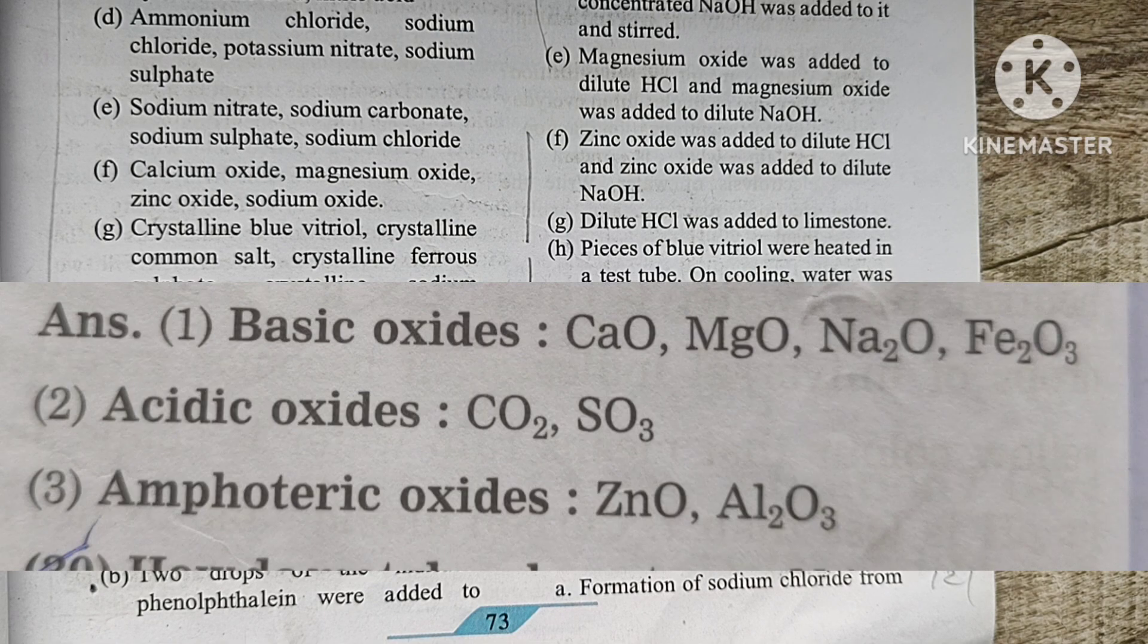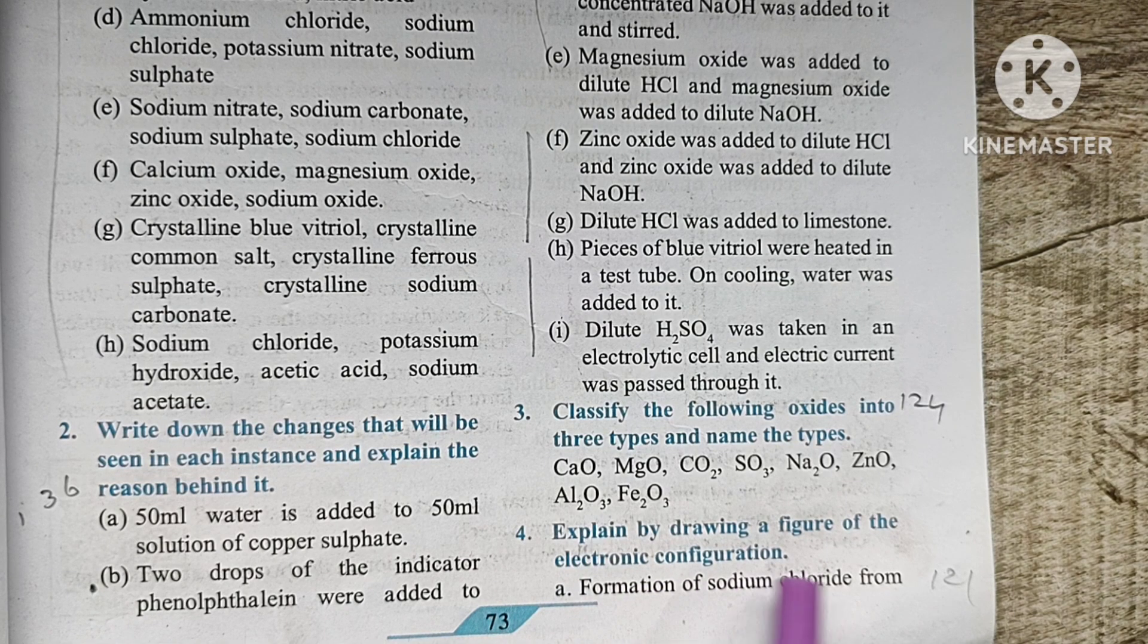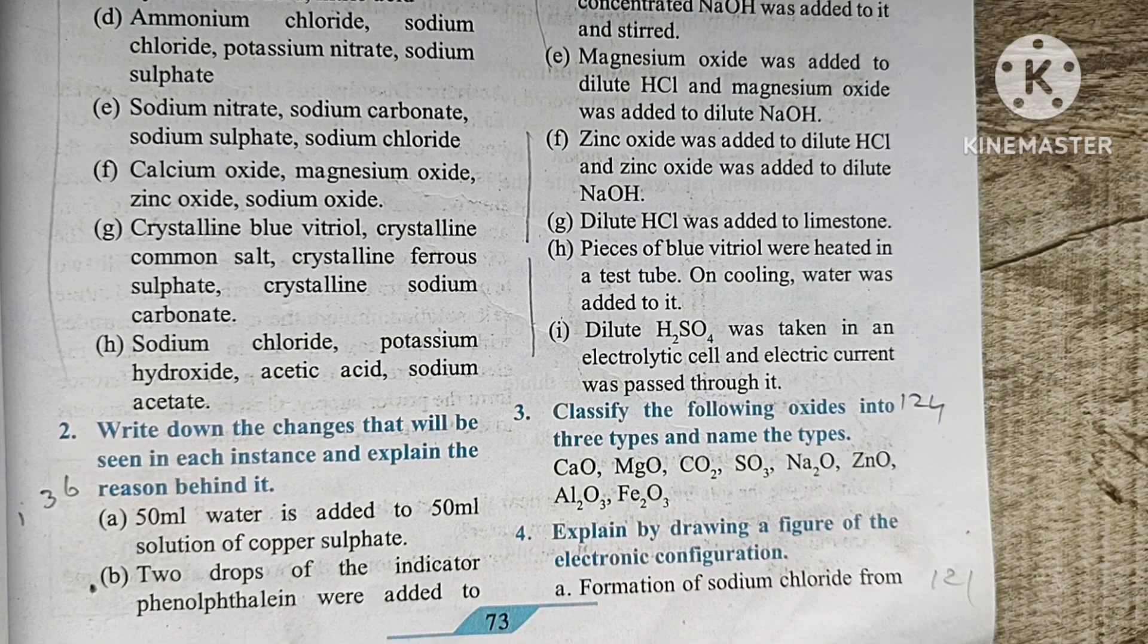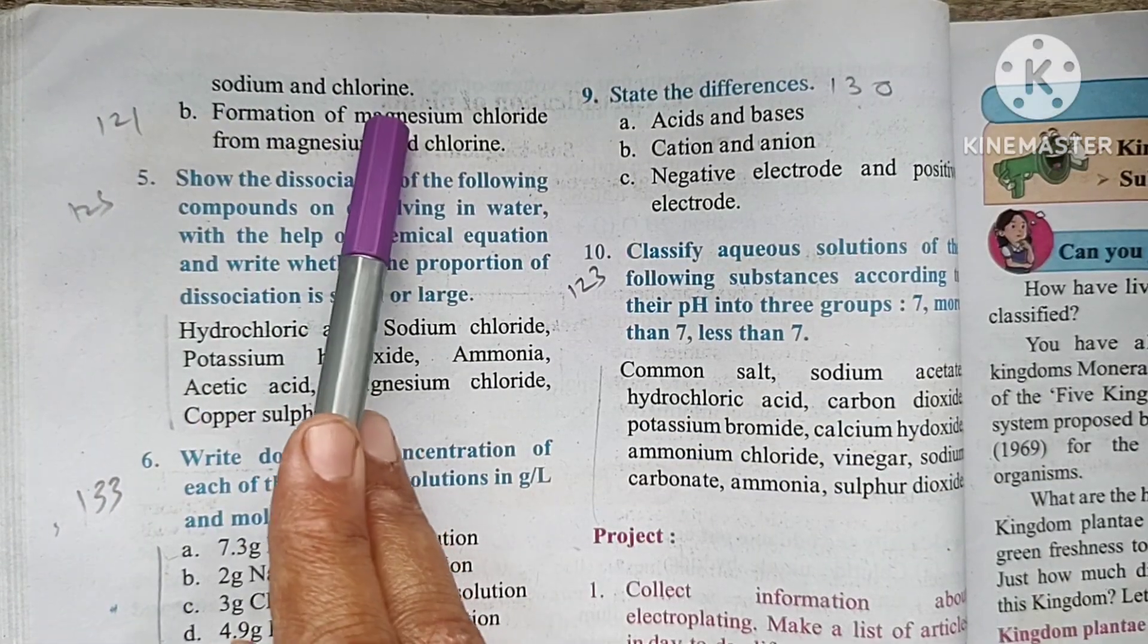Question 3 continued: Explain by drawing a figure of the electronic configuration. Part A: Formation of sodium chloride from sodium and chlorine. This is the answer here.